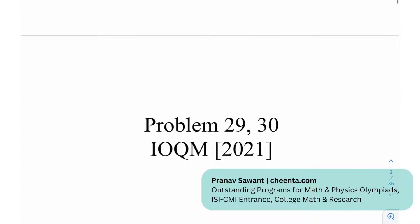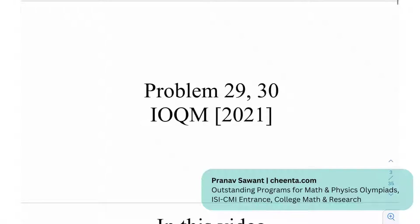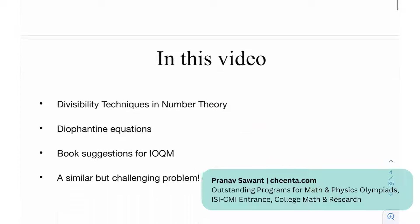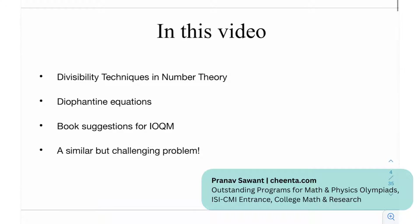We have two problems, problem number 29 and problem number 30 from the IOQM in 2021, the last two problems basically finishing off the test. In this video we are going to be learning divisibility techniques in number theory, how to deal with that not using congruence modulo, then we have Diophantine equations, then we have book sessions for the IOQM, and at the very end a similar challenging problem.